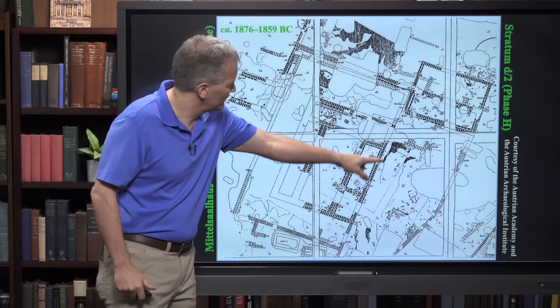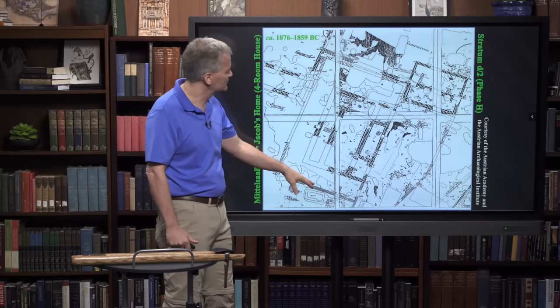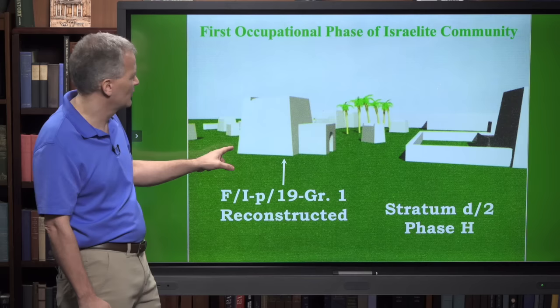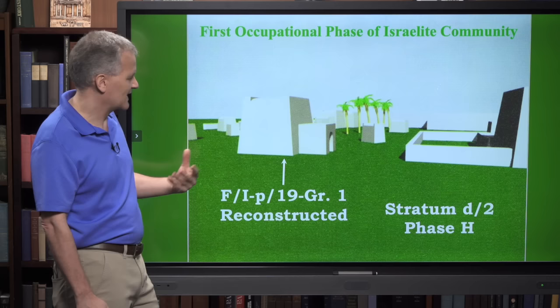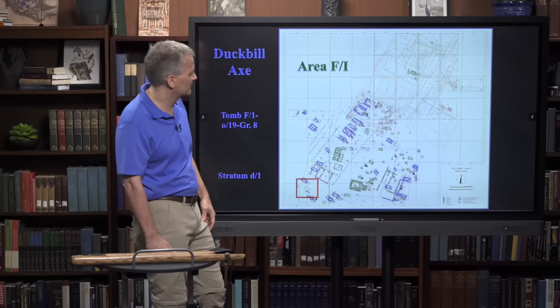The four-room house with one, two, three, four parts had a courtyard built around it, where probably children or animals were running around or grazing. Looking at some of the models that were made, these are some of the buildings that would have existed at this time in Stratum D2, Phase H, when Jacob was still alive.